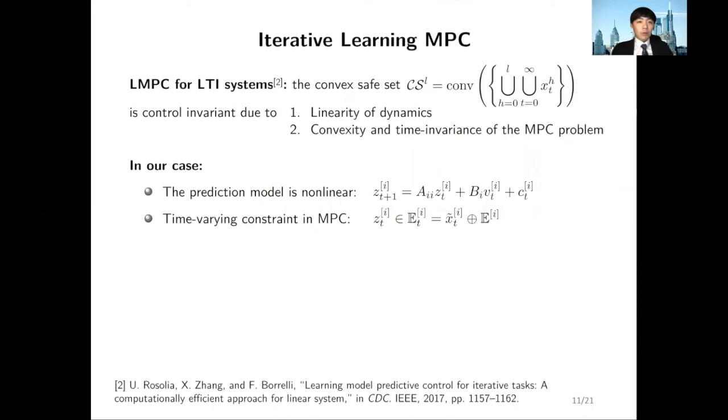However, recall that our prediction model is non-homogeneous because of the offset term C of T. The MPC problem also has time-varying bounded incompliance constraints, saying the nominal state should be in set E of T defined by the time-varying reference trajectory X tilde. So the learning MPC technique is not directly applicable in our distributed control setting.